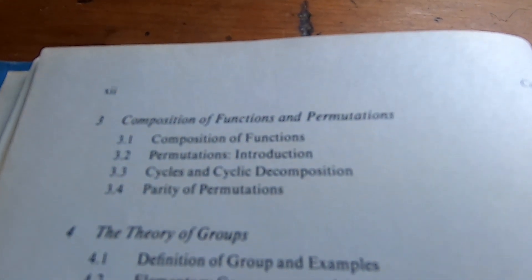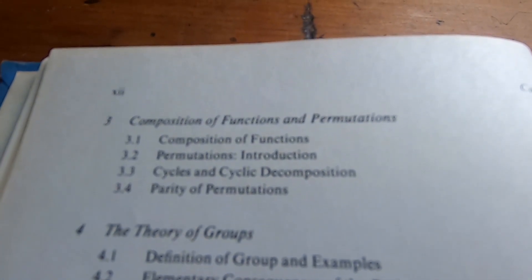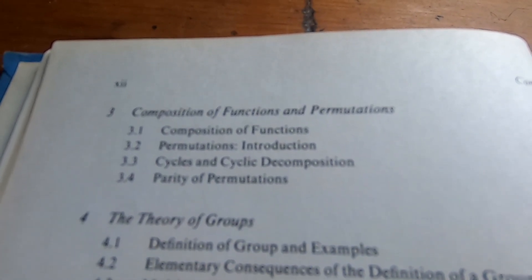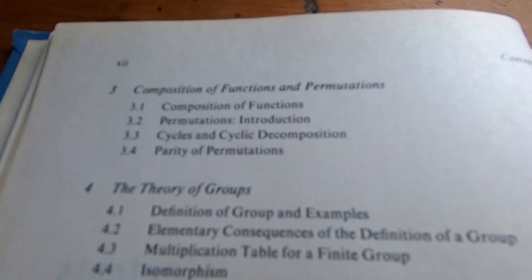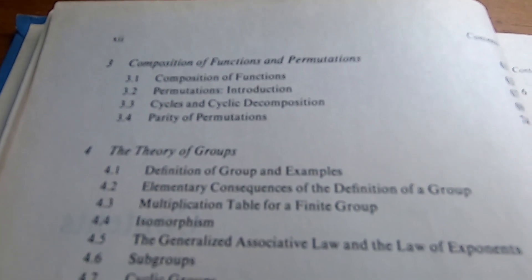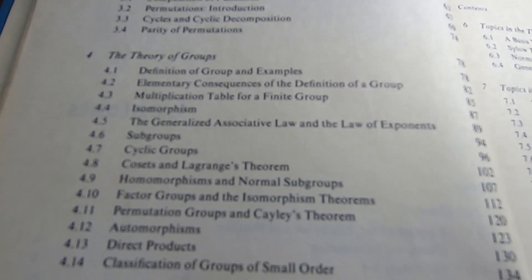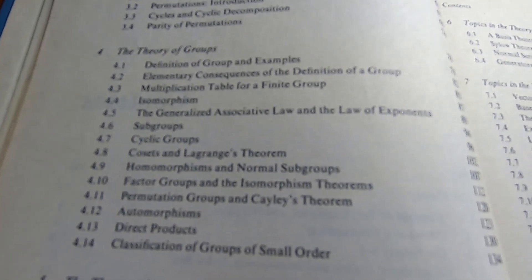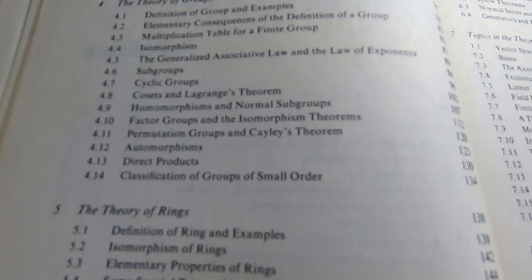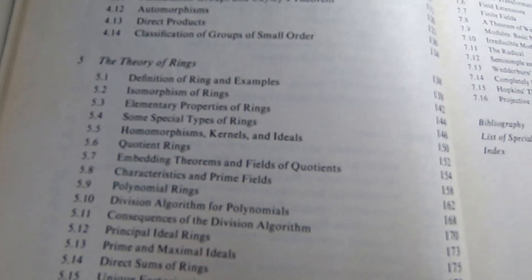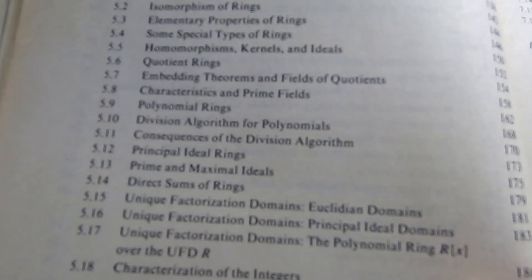Then it talks about composition of functions and permutations. This is actually where the book gets a little bit weird. The notation that the authors use for functions is a little bit different than what you see in other books. And I'll show you that once we take a look further in this book. It talks about group theory, all the basic stuff. Then it jumps into Ring Theory, and it covers quite a bit, a lot more than many of the beginner books cover.